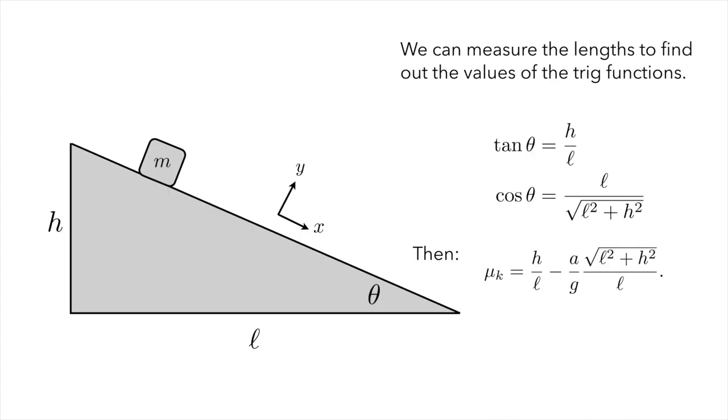We can also measure the lengths of the triangle here to determine the trig functions. So this is a key point: we don't know what theta is, but we can figure out what the tangent and cosine of theta are by using trigonometry and the definitions of these trig functions. Tangent theta is just going to be the opposite over adjacent, which is h over l here, and then the cosine of theta is going to be the adjacent over the hypotenuse, which is l over square root of l squared plus h squared from the Pythagorean theorem.